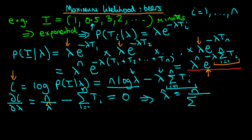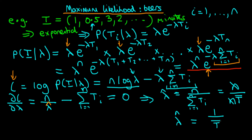Rearranging gives lambda-hat equal to n over the sum from i equals 1 to n of ti. The denominator is n times the average waiting time t-bar, and the numerator is n, so the n's cancel, giving the intuitive result that lambda-hat equals 1 over t-bar. This makes sense: if the average waiting time is two minutes, then the average number of beers ordered per minute is one half.